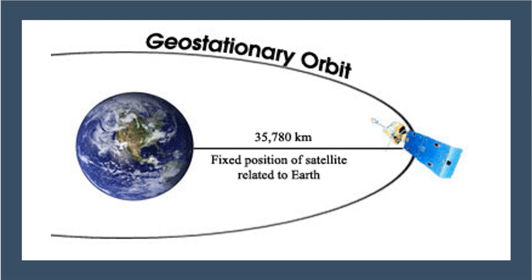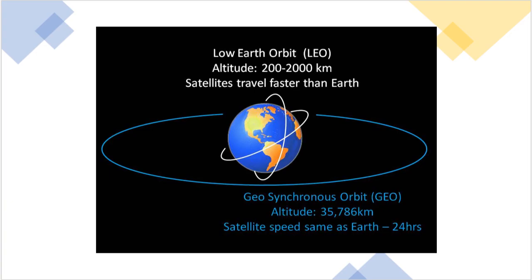The precise altitude of 35,786 km is known as geosynchronous orbit. Here the satellite will be traveling at the exact rotation speed of earth. The rotation speed of earth is roughly 1,600 km per hour.